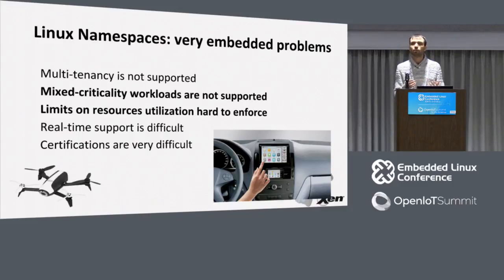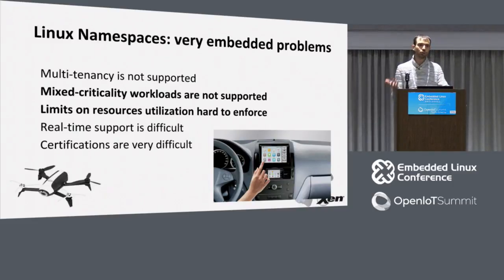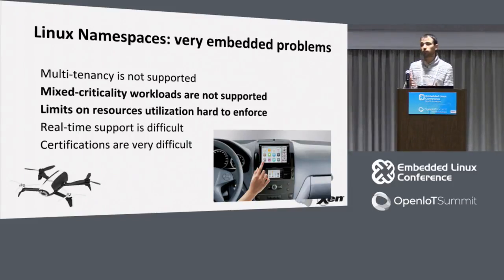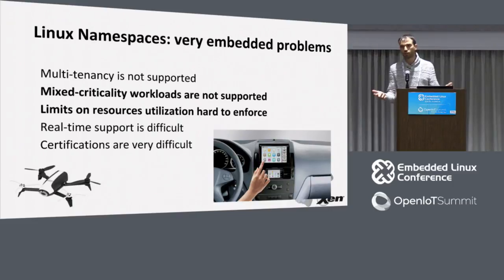It's difficult to offer real-time support to applications that use Linux namespaces. Real-time Linux kernels tend to be different releases and configurations from the usually very large kernel you use for Linux namespace applications. And certifications: sometimes you need to certify your software for safety — like on a car — and the smaller the better. If you have a very large Linux kernel, it's very difficult to certify for that use case.